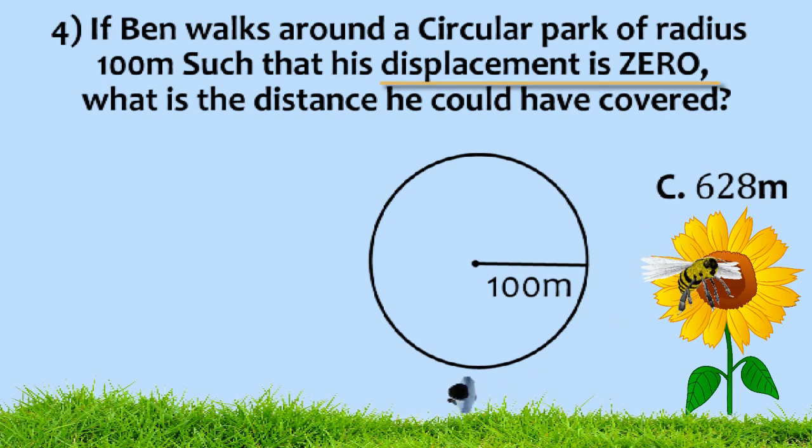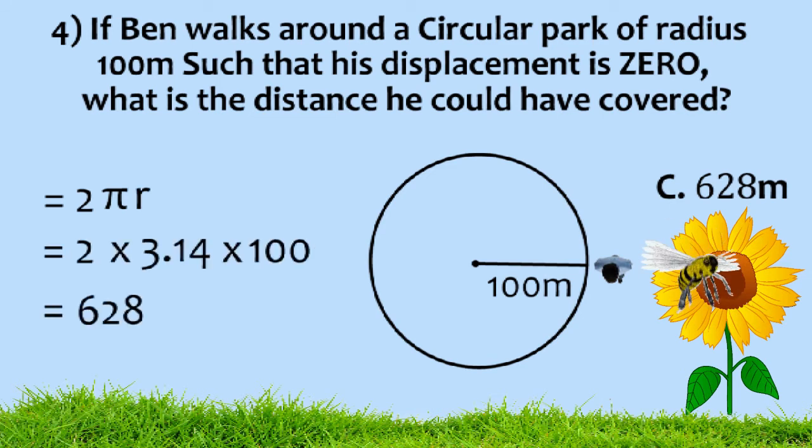When the displacement is zero, the initial and final points are the same. So, the distance travelled will be the circumference of the circle, which is 2 pi r. Now, let's substitute the values.